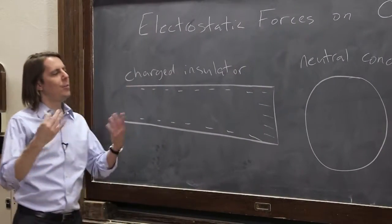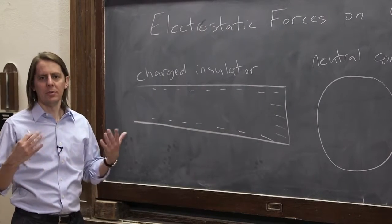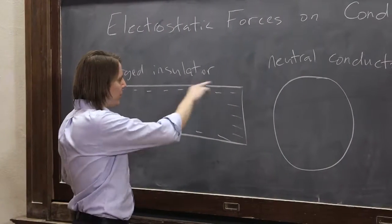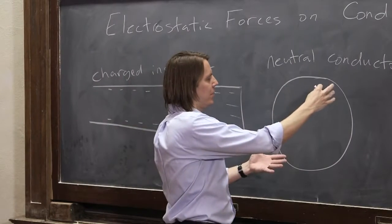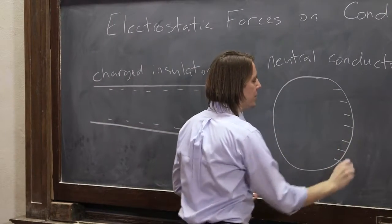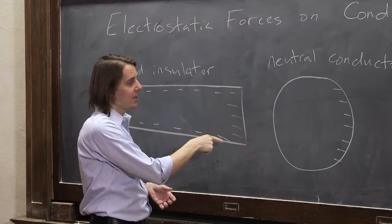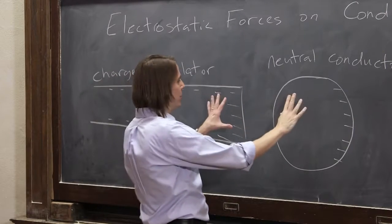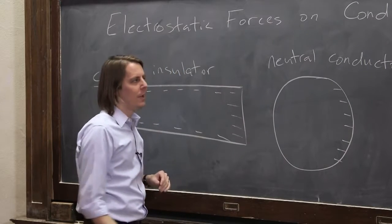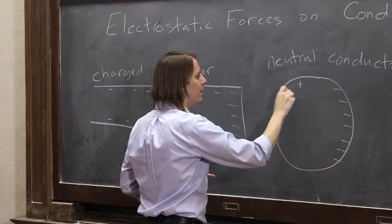I'm going to describe it as though our conductor is a metal — let's assume it's a metal. So if we have negative charge here, this metallic conductor has free electrons in it. They want to get as far away from these negative charges as they can. So the free electrons will feel a repulsive force and they'll go to this side. Since it started out neutral, that will leave this side positive.